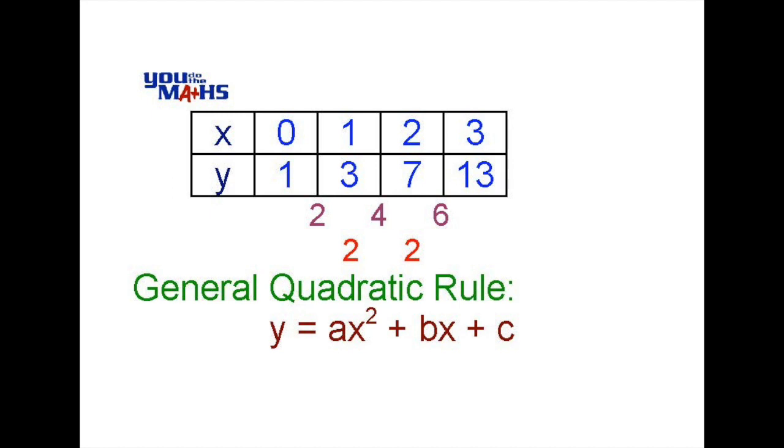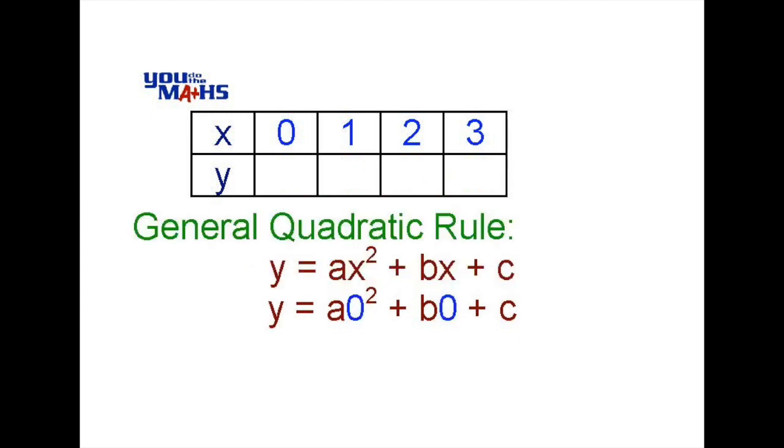Let's have a look what happens when we replace the x value in our quadratic rule with a 0. What you get is 0 squared is 0 and b times 0 is 0 and what comes out is c. Let's have a look what happens when we put a 1 in there. When you have 1 squared you get a, 1 times b is b so we get a plus b plus c.